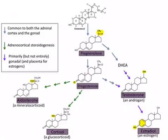Steroid hormones are made in both the adrenal cortex and in the gonads. Some of these hormones are made in both places, for example pregnenolone, progesterone, and DHEA. Some are made only in the adrenal cortex, such as aldosterone and cortisol, and others are made only in the gonads, such as testosterone and estradiol.